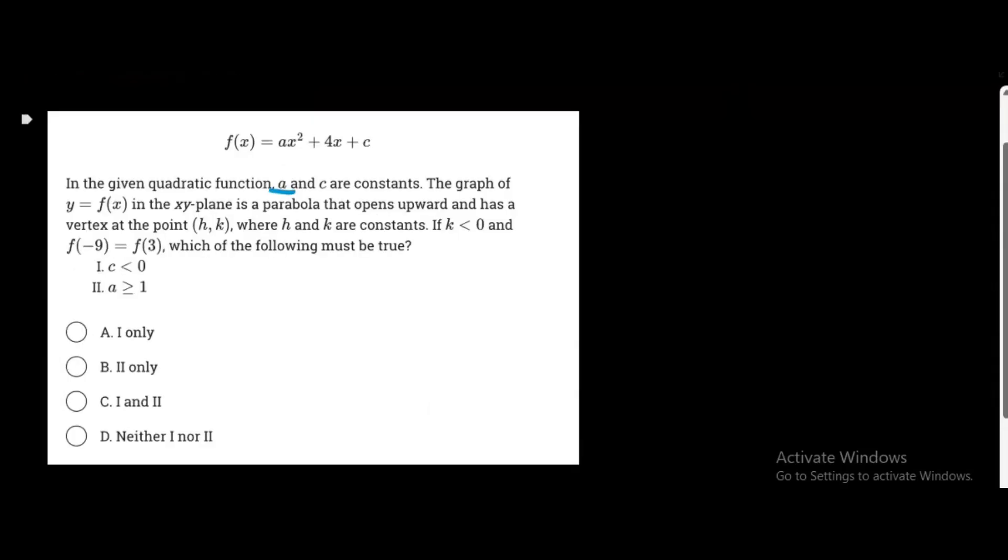In the given quadratic function, a and c are constants. The graph of y equals f(x) in the xy plane is a parabola that opens upward and has a vertex at the point (h, k), where h and k are constants. If k is negative, because it's under 0, and f of negative 9 equals f of 3, which of the following must be true?